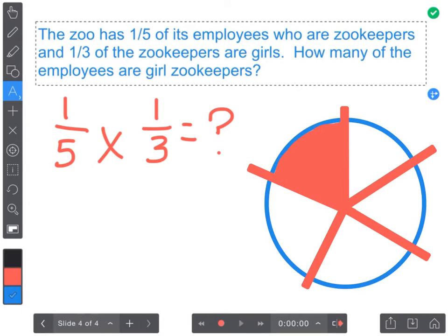To multiply it by one-third what I'm actually going to do is I'm going to mark lines dividing that one-fifth into thirds. And then I'm going to go ahead and color in my one-third that are girls. So remember at this point my one-fifth represents how many zookeepers there are and that one-third within the one-fifth are girl zookeepers.